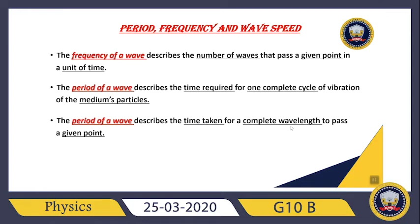Do you remember the wavelength? As we said in our previous session, the wavelength is the distance between two successive crests or two successive troughs — it makes a complete cycle. So the period of the wave describes the time taken for a complete wavelength to pass a given point, or for making one complete cycle of vibration for the medium particles.